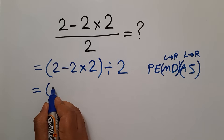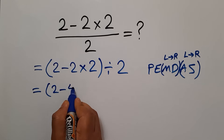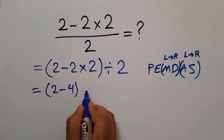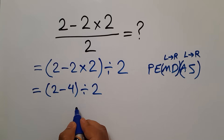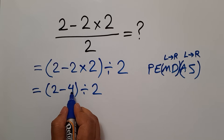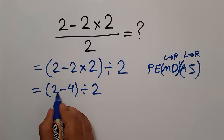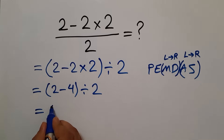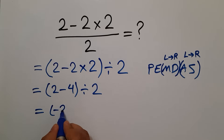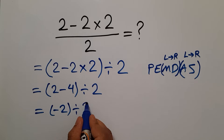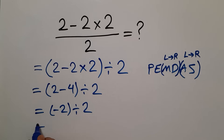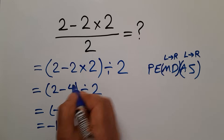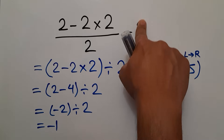So we have (2 minus 4) divided by 2. 2 minus 4 equals negative 2. So negative 2 divided by 2 equals negative 1. Therefore, our final answer to this problem is negative 1.